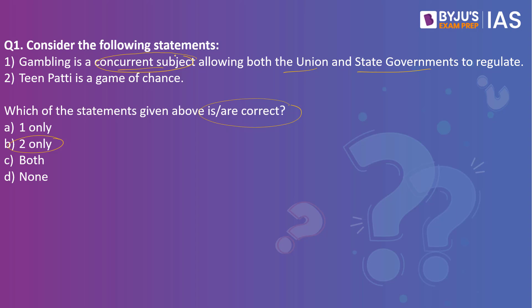Entry number 34 speaks about betting and gambling, and this is in the State List. So remember, betting and gambling is in the State List, and it is the state government which would be able to come up with its own laws and ultimately regulate betting and gambling. This is why each state has its own set of laws — some states may allow it, others may not. So the first statement is wrong.